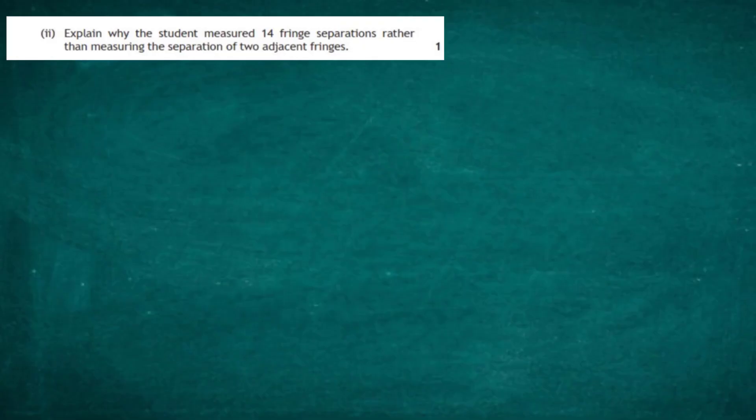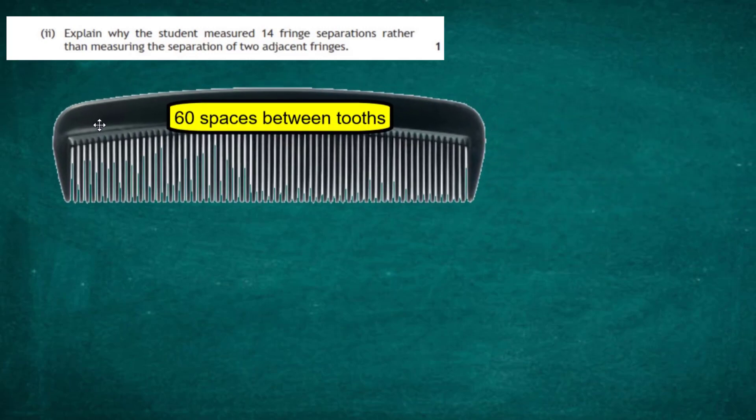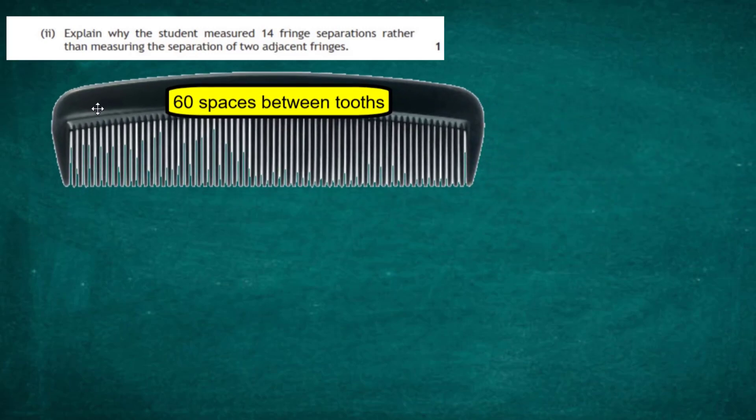Question 13 Part A Part 2: Explain why the student measured 14 fringe separations rather than measuring the separation of just two adjacent fringes. By measuring 14 fringe separations you're reducing your uncertainty in your measurement. We can show this using a comb as a good example, since it's very similar to working out fringe spacings.